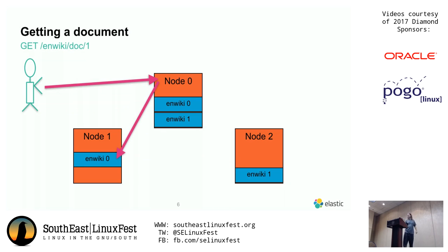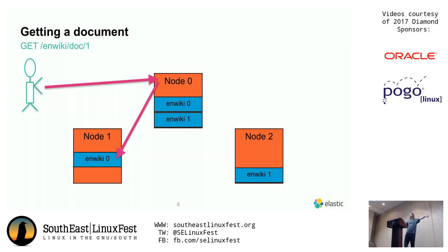Getting a document looks fairly similar to putting a document. You look up the index from the URL, take the type and the ID, hash them, and pick a shard. In this case, Elasticsearch round-robins which of the copies the GET comes from. Even though you sent the request to node zero, sometimes it goes to node one, sometimes node zero — it doesn't matter. Then node one fetches the document off disk and replies to node zero, which replies to you. The thing you get back is pretty much what you put in plus some metadata — a version, the index it was stored in, and a couple other things.